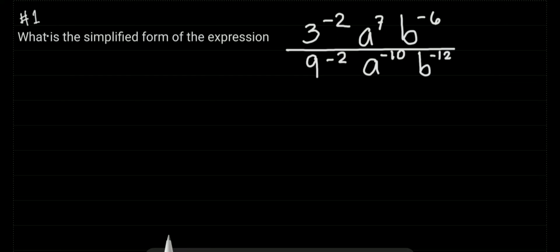3 to the power of negative 2 times a to the power of 7 times b to the power of negative 6, all over 9 to the power of negative 2 times a to the power of negative 10 times b to the power of negative 12. Since 3 and 9 have negative exponents, we can rewrite this.